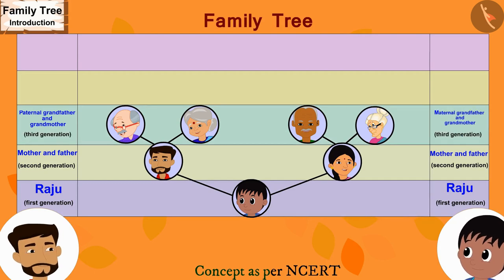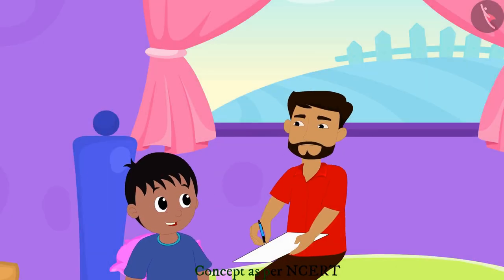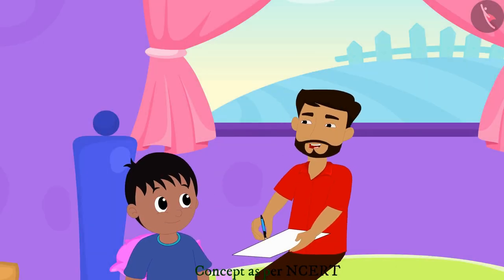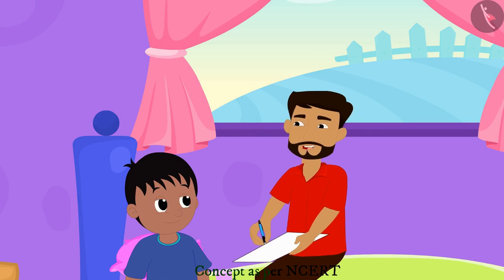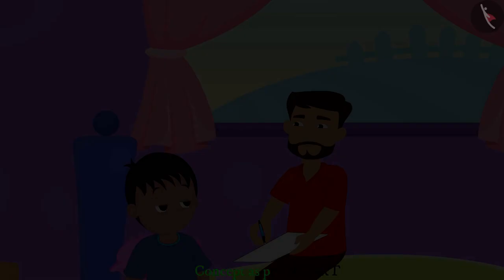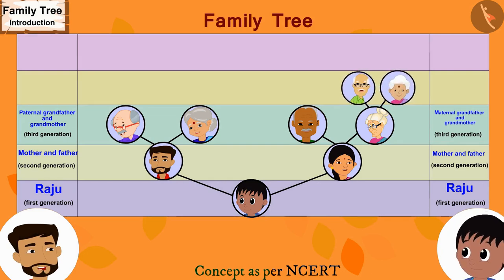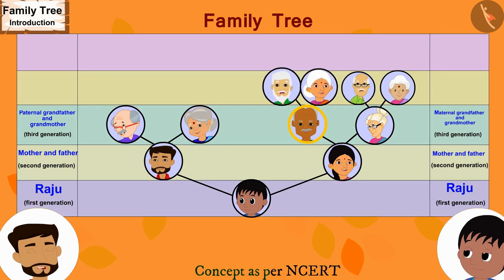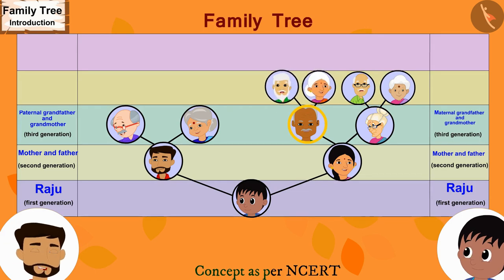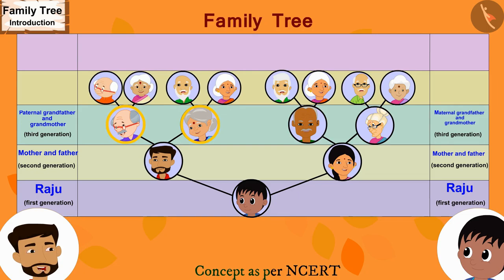Raju thinks the family tree is now complete, but his father says no — there are yet more people to add. For the maternal grandmother's parents, they draw two more lines and write their names. Then two more lines are drawn for the maternal grandfather's parents, and similarly, the paternal grandfather and grandmother's parents are also added to the family tree.